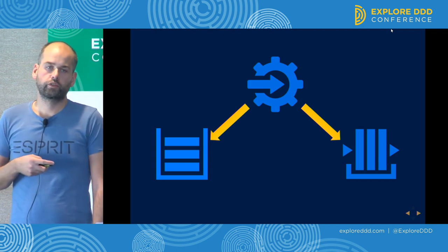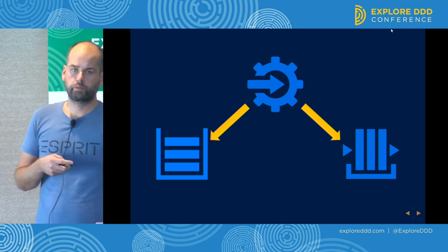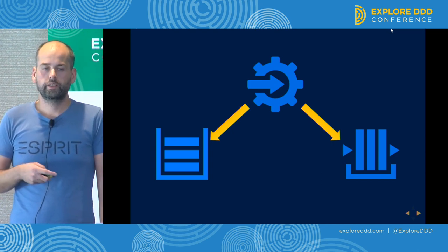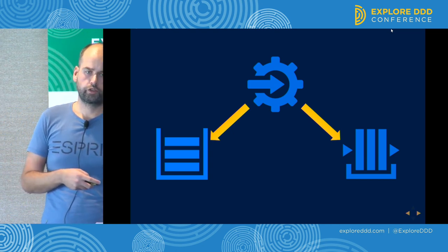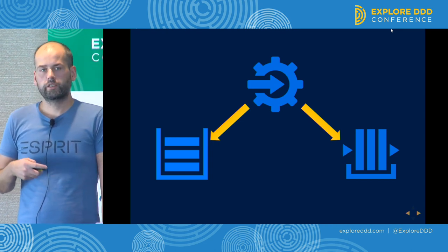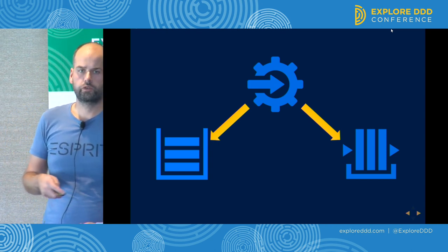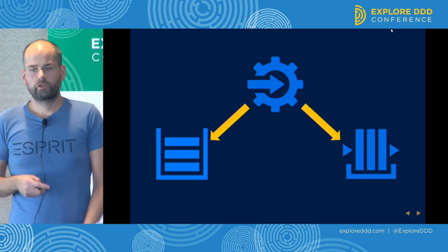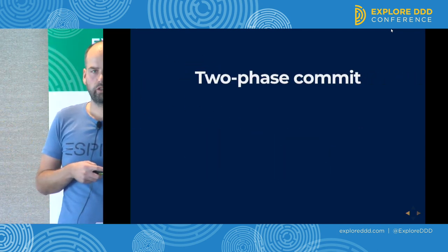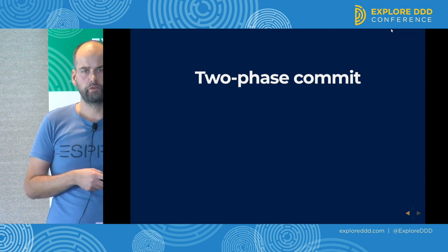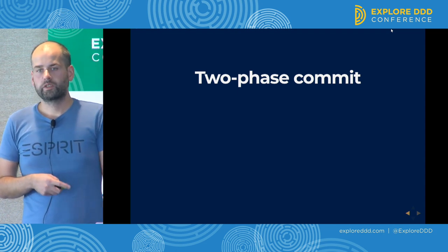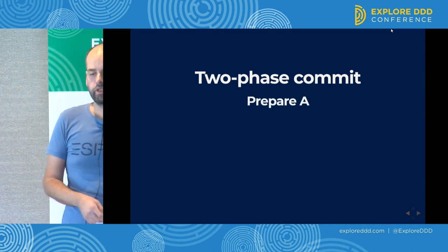A single microservice needs to modify data in one place — in a database, let's say in HQ — and then send a message that gets to the remote location. So it needs to access two transactional resources at once. There is a well-known solution to that problem: two-phase commit. A quite old protocol that allows us to implement distributed transactions.